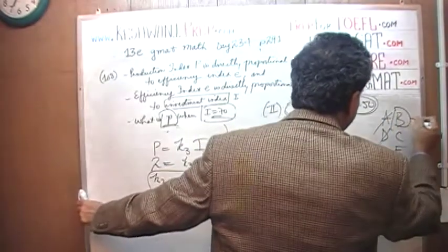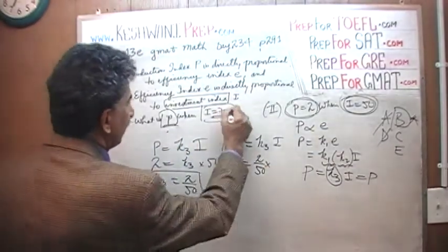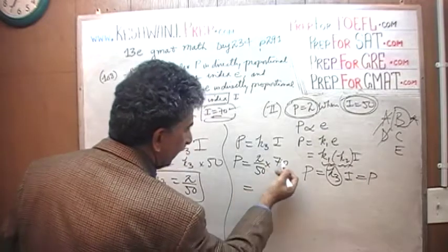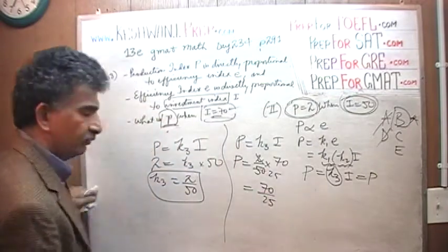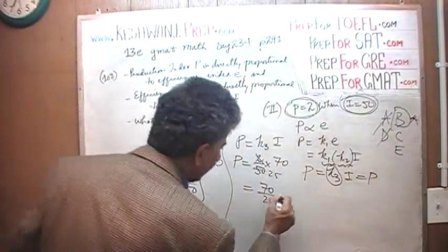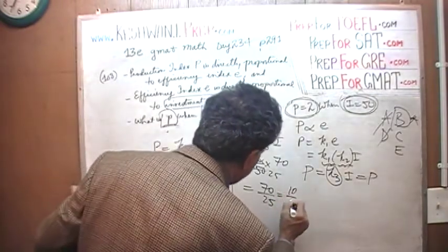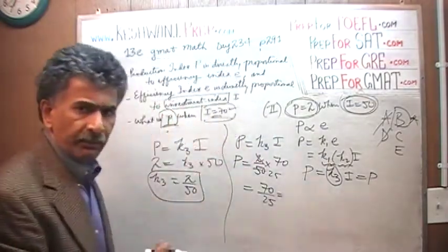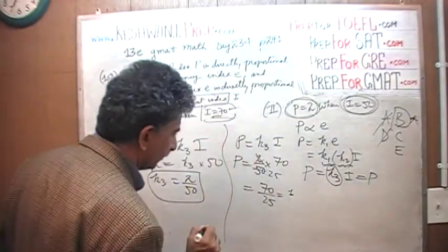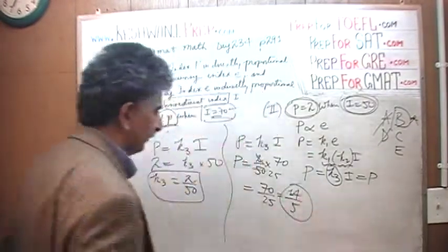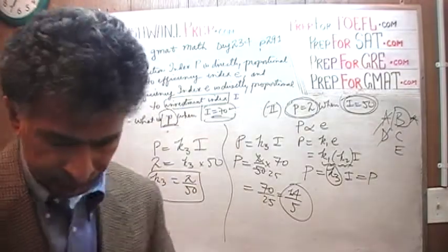The answer is B. So K3 we found out is 2 over 50 times I which is 70. So that's it. 2 times 70 over 50. Let's reduce it. So it looks like 70 over 25 which can be reduced further by dividing top and bottom by 5. If you divide top and bottom by 5 we'll end up with 14 over 5. That's your answer. 14 over 5 is the answer. You can reduce it more if you want to but you can leave it like this.